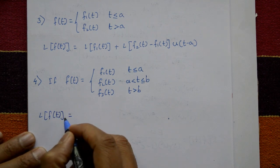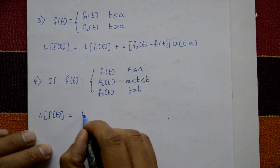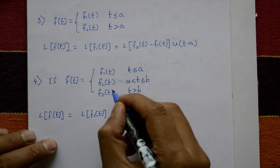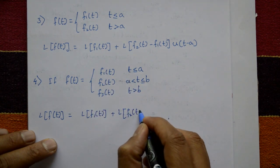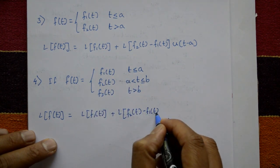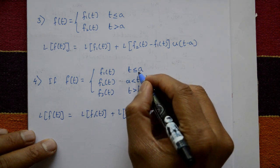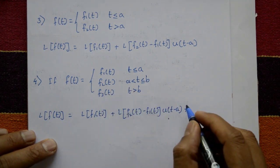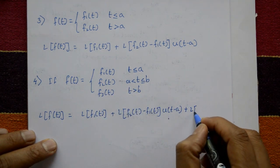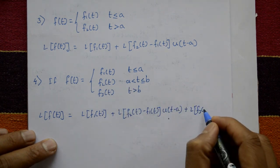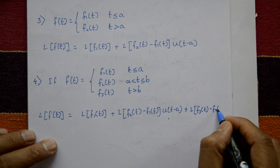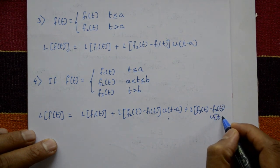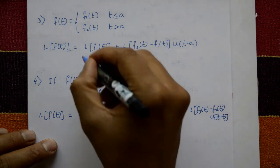Then the Laplace of f(t) is equal to Laplace of f1(t) plus Laplace of [f2(t) minus f1(t)] into u(t minus a), plus Laplace of [f3(t) minus f2(t)] into u(t minus b). These are the four properties.